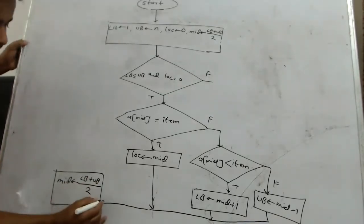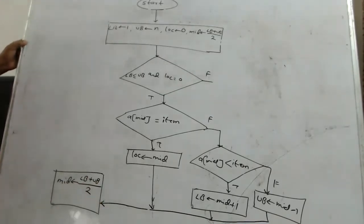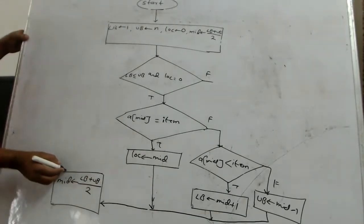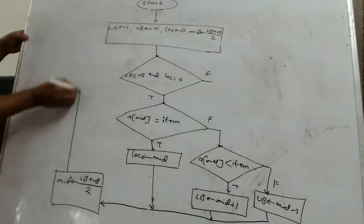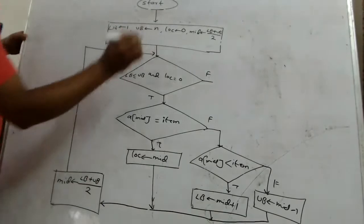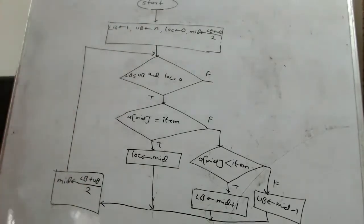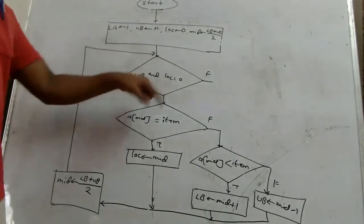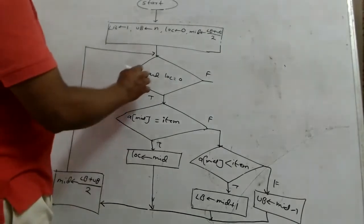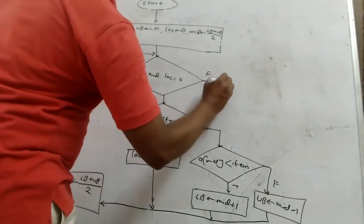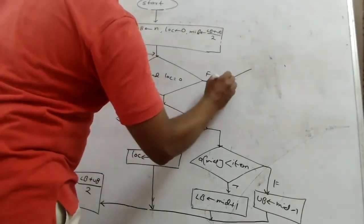Direction बहुत important है — आप फिर से loop पर जाएंगे। Control फिर से loop पर जाएगा। जब loop की condition false हो जाएगी, तो उस case में आप loop से exit कर जाएंगे।